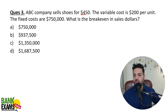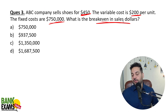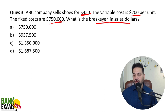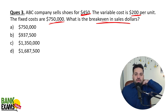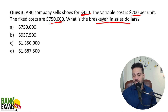ABC company sells shoes for 450 dollars. Variable cost is 200 dollars per unit. The fixed cost is 7 lakh and 50 thousand dollars. What is the break-even point? I would highly recommend you to pause the video and try to solve it yourself — give it a try, it's actually very easy.